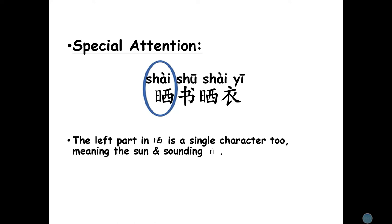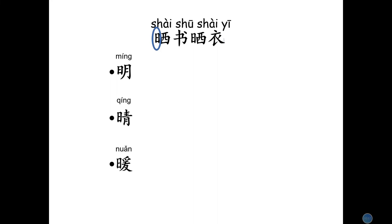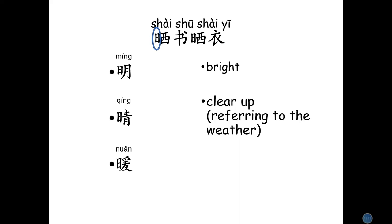I want to draw your special attention to the character shai. The left part in shai is a single character too — it means the sun and sounds ri. In Chinese, some characters with ri carry meaning related to the sun. For example: the first character sounds ming and means bright; the second sounds qing and means clear up; the last sounds nuan and means warm. Ming, qing, nuan. Very good.